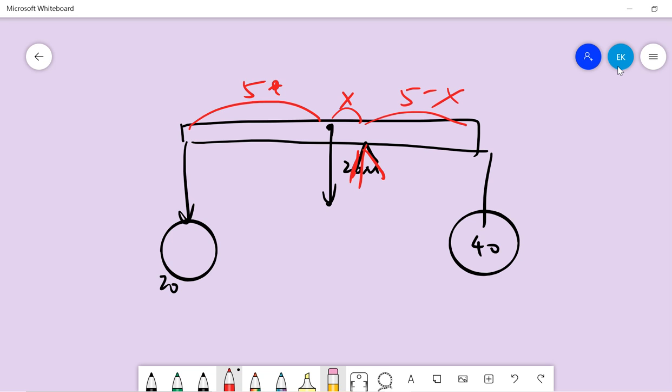The left-hand side torque should be the same as the right-hand side torque. So we have 20(5 + x) plus 20x equals 40(5 - x).